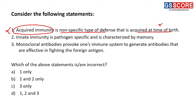Second statement: innate immunity is pathogen-specific and is characterized by memory. This is also incorrect because innate immunity is present since birth and is not characterized by memory. Innate immunity is non-specific in nature. You can consider these two statements as interchanged — the properties of acquired and innate immunity have been swapped.